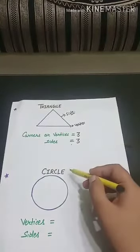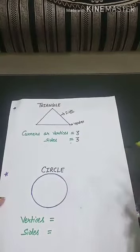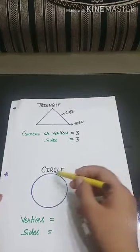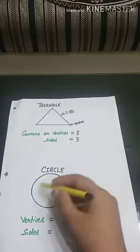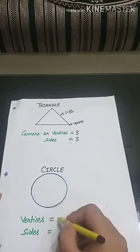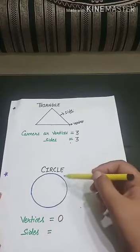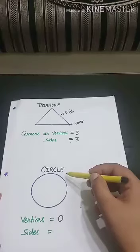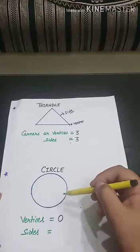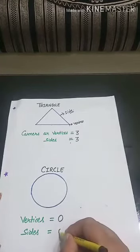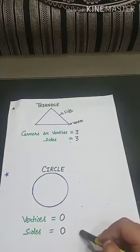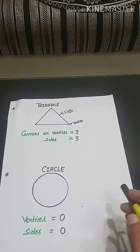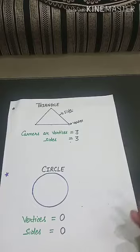The last plane shape is circle. How many vertices and sides does a circle have? A circle has no corner points at all. So how many vertices? Zero. And how many sides does a circle have? There are no sides in a circle either — no vertices and no sides. So a circle has zero vertices and zero sides.